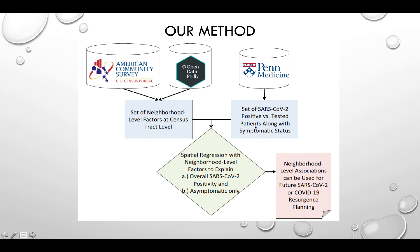From medicine, we extracted a set of SARS-CoV-2 positive patients as well as symptomatic status. We separated patients into symptomatic patients — COVID-19 patients — or asymptomatic SARS-CoV-2 positive only patients. We then fed these patients and this neighborhood-level information into a spatial regression model to help explain overall SARS-CoV-2 positivity, and to look at the asymptomatic-only subgroup. This allowed us to develop neighborhood-level associations for future resurgence planning and other public health measures.